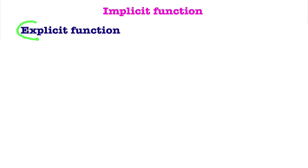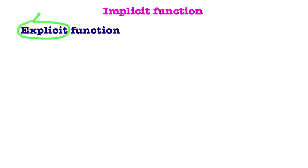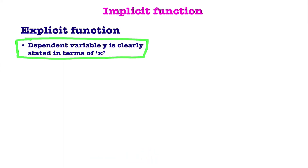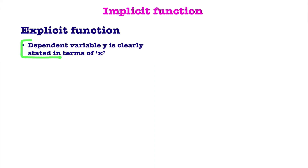To understand the definition of implicit function, first you must know what is an explicit function. What is the general meaning of explicit? Explicit means clearly stated — there is no room for confusion. First, we will try to understand the definition of explicit function, and I will explain about it clearly with the help of examples.